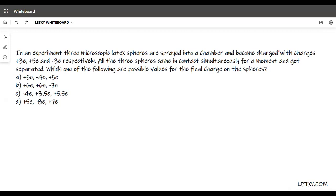All three spheres came in contact simultaneously for a moment and got separated. Which of the following are possible values for the final charges on the spheres? These three spheres already have some charges, and when they touch, the charges will no longer remain the same. The q1, q2, and q3 charges on the three spheres will become different, but there is a law we went through in the first chapter.